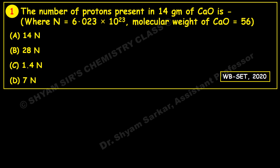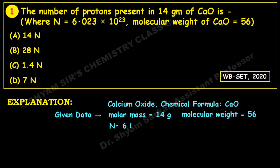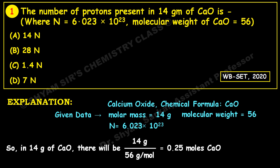Write down the given data: calcium oxide has formula CaO, molar mass given is 14 grams, molecular weight is 56, and N = 6.023 × 10²³. First, calculate the number of moles: 14 g ÷ 56 g/mol = 0.25 moles of calcium oxide.